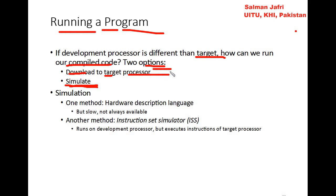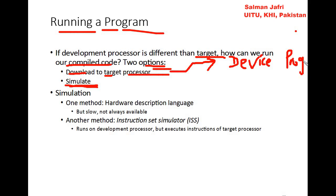Downloading to the target processor can take many forms. One approach is to use a device programmer — a universal device in which you place your target processor, program it, and then put that processor into your target device on a breadboard to verify how the program is running.